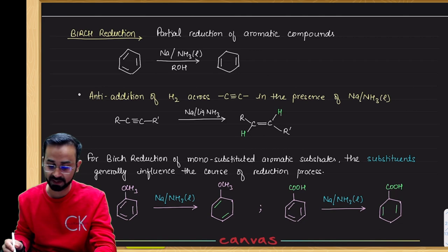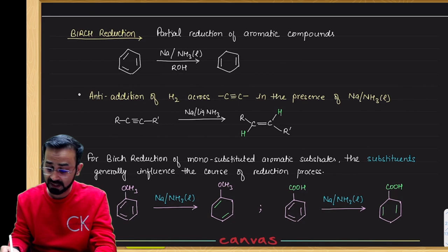They are isolated double bonds. So simply, you will treat benzene in the presence of liquid ammonia and alcohol. Out of three, one double bond will be reduced, leaving the other two in the isolated form, not conjugated.